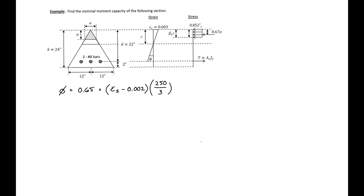While our steel has yielded, it's not above the tension-controlled limit of 0.005, so we're in the transition zone. We need to find our phi. Plugging in our epsilon-s of 0.0023, we find that phi in this case will be 0.68. We'll use that when finding our factored nominal moment capacity.